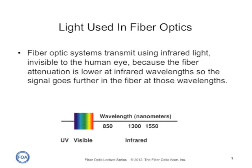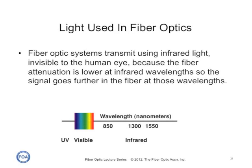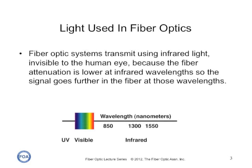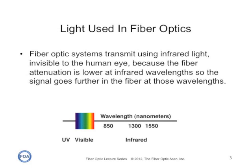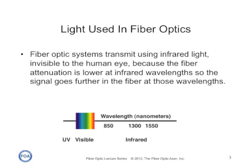Some advanced fiber optic systems transmit light at several wavelengths at once through a single optical fiber to increase the data throughput. We call this method wavelength division multiplexing.